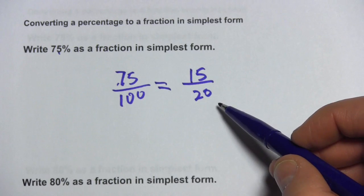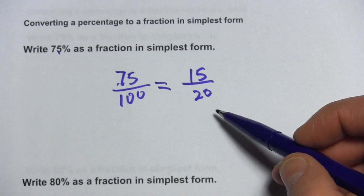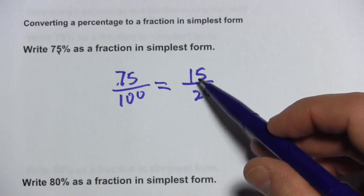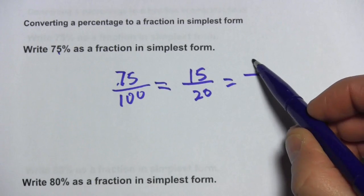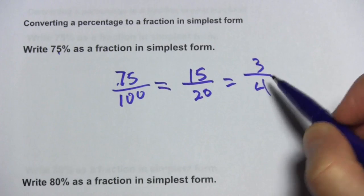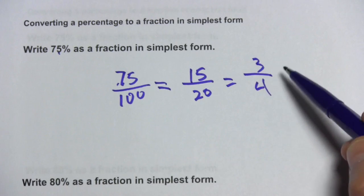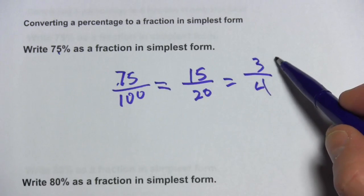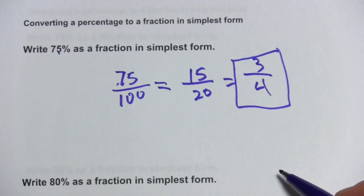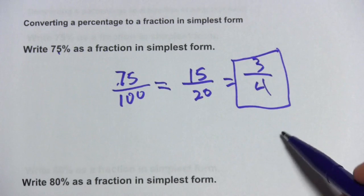So we've got 15/20. It looks like those are still both divisible by 5, so 15 divided by 5 would be 3, 20 divided by 5 would be 4. And I think that's as small as we can get because those are both prime numbers. So 75% is 3/4. That makes sense. 75 cents is 3 quarters.